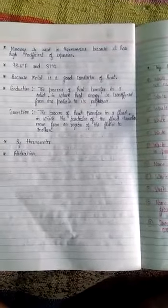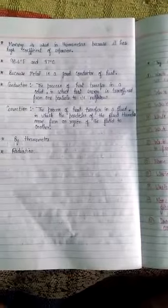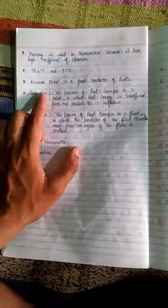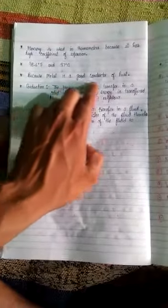Next is, if you hold a metal rod over a flame, the end of the rod away from the flame also gets hot. Why does this happen? It happens because metal is a good conductor of heat.